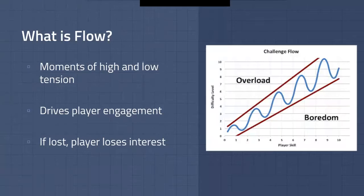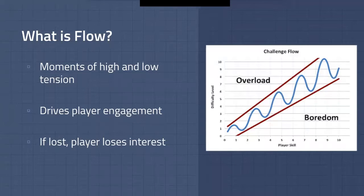First, I need to explain flow. Zen Rhino defines flow as the area between two lines on a graph of difficulty and player skill. Flow travels along a wave between these, providing moments of high and low tension to keep a player engaged. However, if difficulty breaks out of these lines, a player will lose interest in your game. If a challenge is too difficult and chance of success is impossible, or if a challenge is too easy and chance of failure is impossible, the player is no longer interested. So how do we fix this?